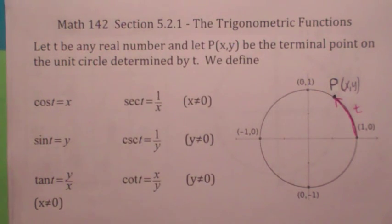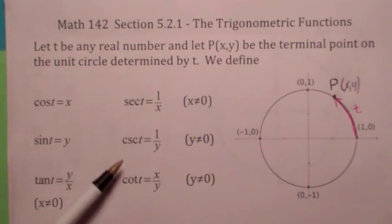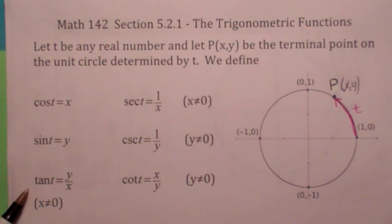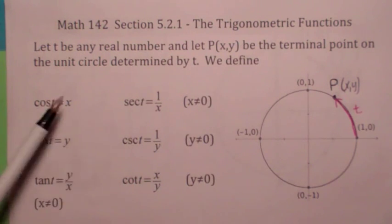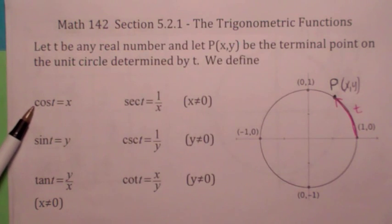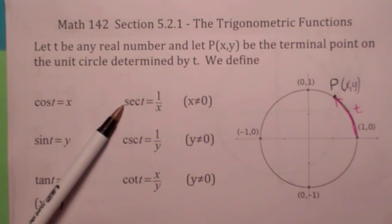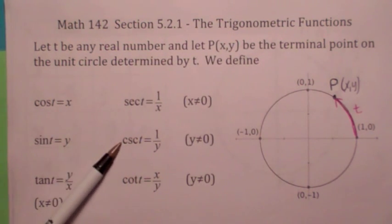There's an issue here with the domain of these trig functions — we're going to address that in the next video. How do you keep it straight so you don't get these mixed up? You should remember that cotangent and tangent are reciprocals. But when it comes to cosine, the reciprocal is secant. One way to remember it: since cosine starts with a C, the reciprocal starts with an S. And since sine starts with an S, the reciprocal starts with a C.